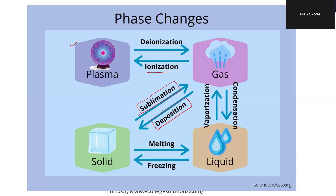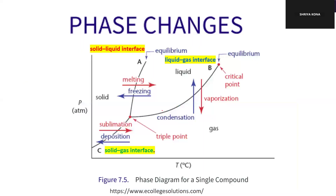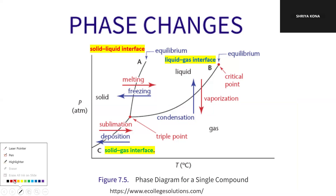This becomes very easy, but when it comes to MCAT, it is going to be super-duper difficult and critical. Understanding phase changes by just looking at the phase diagram is going to be quite difficult, but I'll try to explain it in a simple way. Now let's see that.